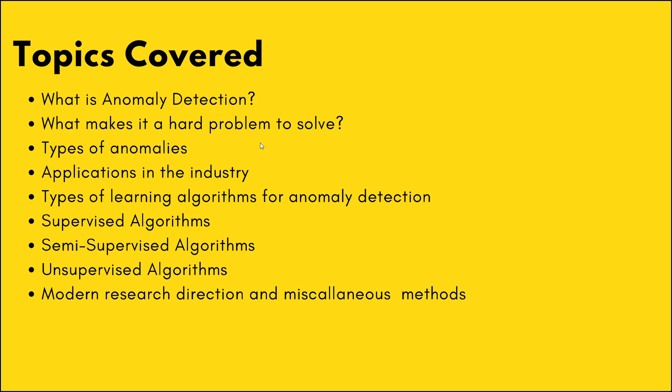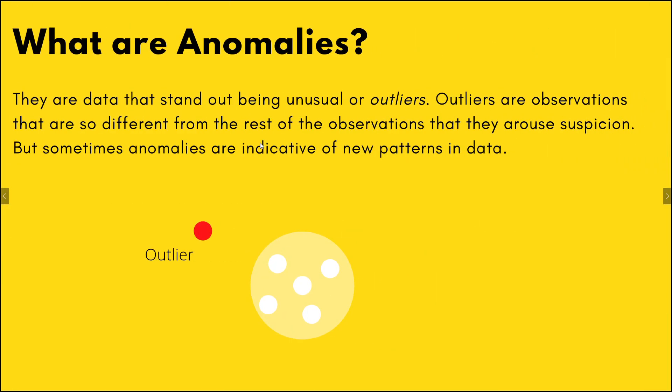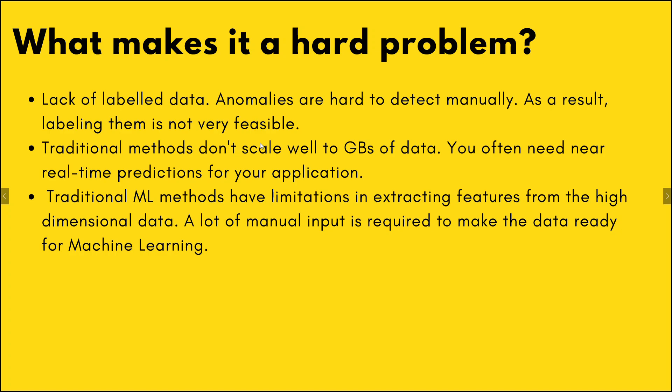We'll cover topics like what is anomaly detection, why it is a hard problem to solve, types of anomalies, applications, and different algorithms, and lastly modern methods to perform these tasks. Anomalies are data points that are different from the usual pool you have. If you have a set of data points that are similar and the next one is completely different, you would suspect that to be an anomaly. Often they are also called outliers.